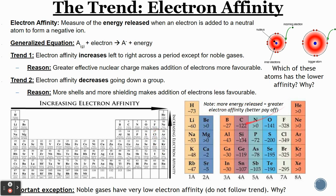One thing I want to mention is this table that shows electron affinity values. It looks a bit interesting because I said that electron affinity increases as you go from left to right — and you might go, isn't negative 60 larger than negative 328 in terms of numbers? Yes, it is closer to zero. But a big negative number means high electron affinity, because that negative number represents how much energy was released from the atom. So the more negative the number, the higher that electron affinity is.